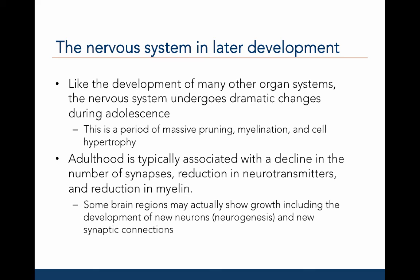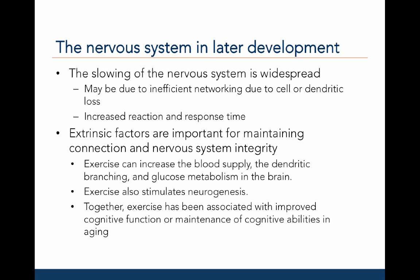Adulthood is typically associated with a decline in the number of synapses, reduction in neurotransmitters, and reduction in myelin. However, some brain regions may actually exhibit growth, including the development of new neurons — also called neurogenesis — and the development of new synaptic connections. Although some brain regions may be maintained during adulthood, declines in the nervous system, particularly slowing, are evident during aging. This slowing may be due to inefficient networking from cell or dendritic loss, or degradation of the cells, resulting in increased reaction time and response time to external stimuli.